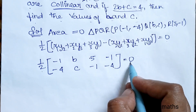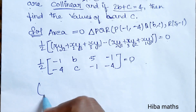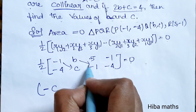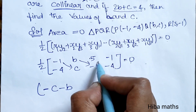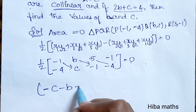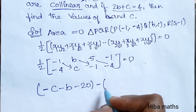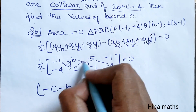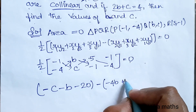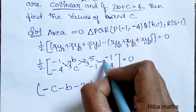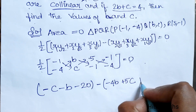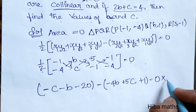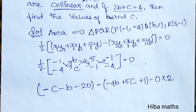1 by 2 is equal to the other side. This is the first part. Minus 1 into c minus minus 1 into b minus b. 5 fours are 20, minus 20. Minus 4 into b minus 4b, c into 5 is 5c, minus 1 into minus 1 plus 1 is equal to 0, multiplied by 1 by 2.